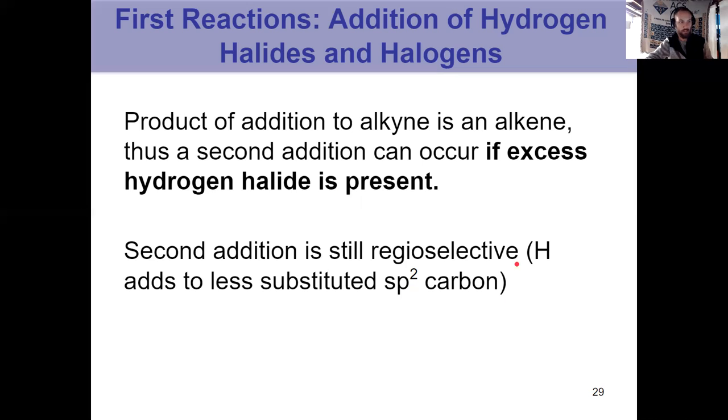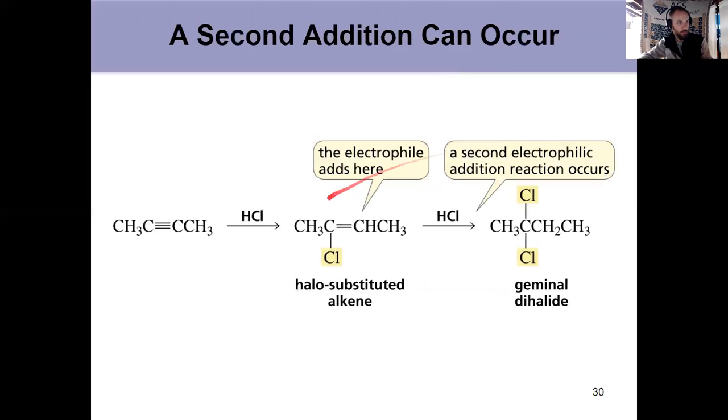My electrophile is adding to the less substituted sp2 carbon, hydrogen in the first case being the electrophile. So I undergo one addition and I get my H and my Cl that added. I go from an alkyne to an alkene because I broke one pi bond. If I have excess HCl, then it can happen again.